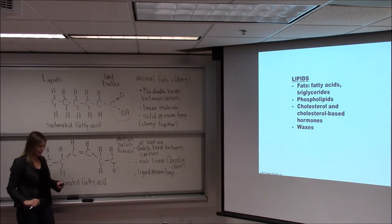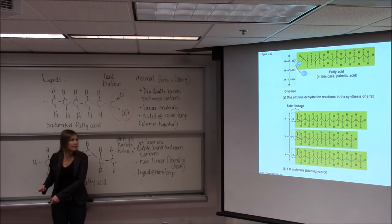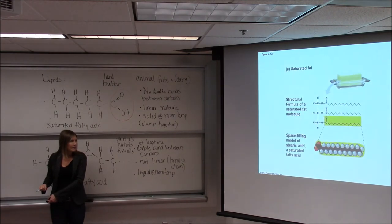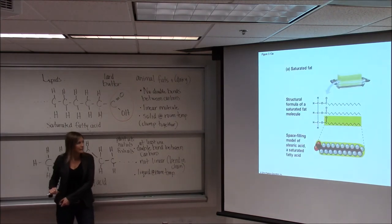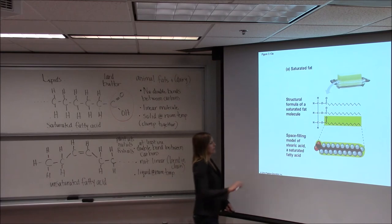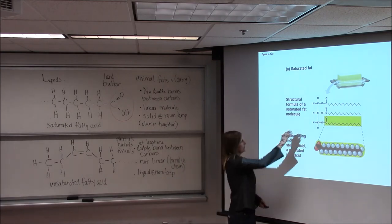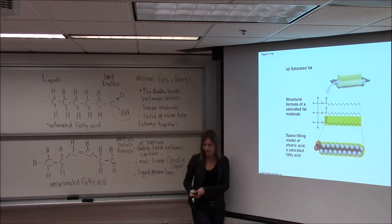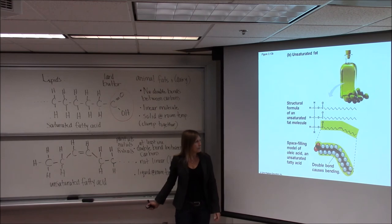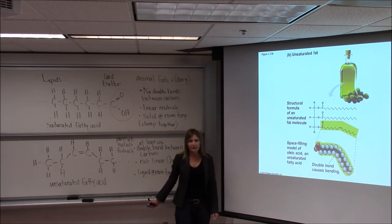Let's look at a picture of that. Here is a triglyceride — we'll come back to that in a minute. This would be the saturated fat — very linear, and those can clump together. And then this would be the bend in the unsaturated fat.